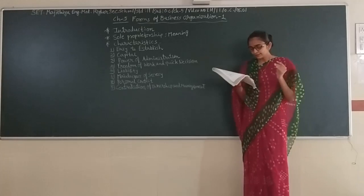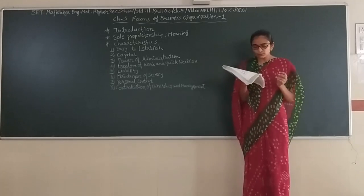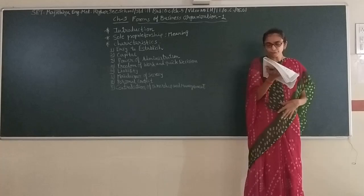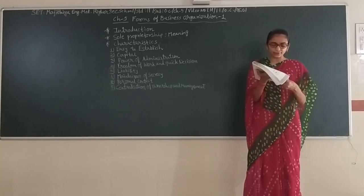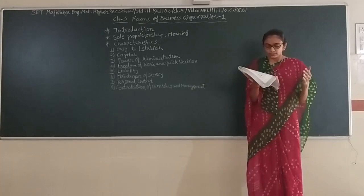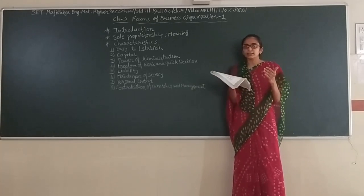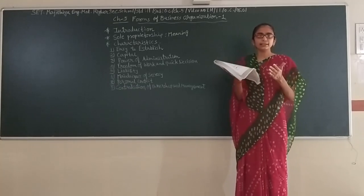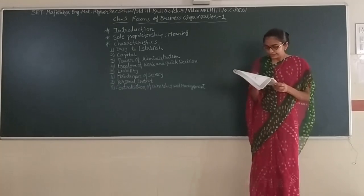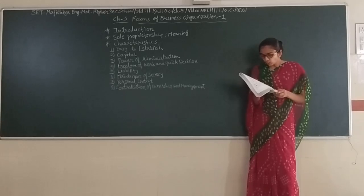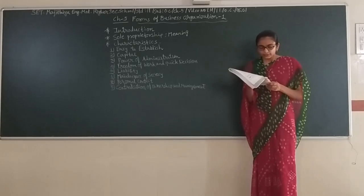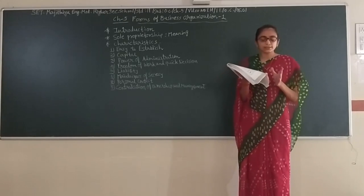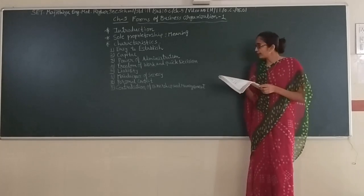Second, arrangement of capital. The owner himself joins the capital. If he finds the capital is not enough, then he can run business by borrowing. The owner himself joins the capital in the firm, and if he finds that capital is not sufficient, then he can take loan from others. The owner himself has the responsibility of arranging capital.